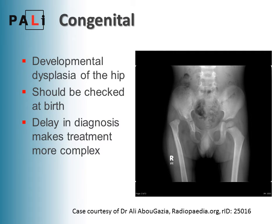For congenital causes, developmental dysplasia of the hip should be checked at birth but can be missed. The hip forms in utero and in the early months — because the femoral head is in joint, the acetabulum forms around it. If the hip's not in joint, that can't happen, and you get an underdeveloped acetabulum, as seen in the right hip here. A delay in diagnosis makes treatment quite a lot more complex, so it really is something you need to pick up early.